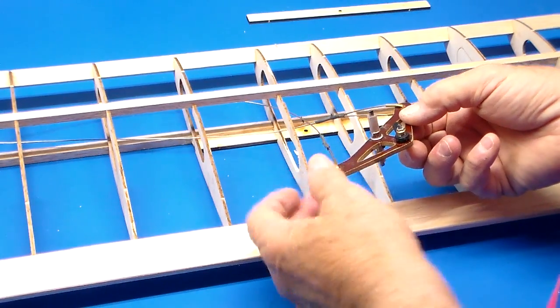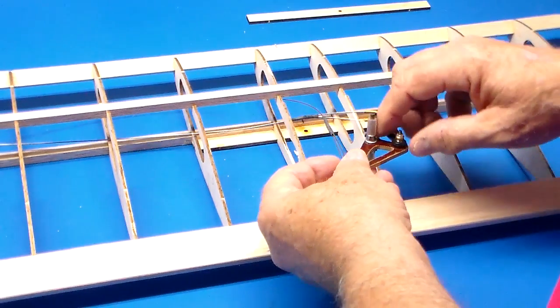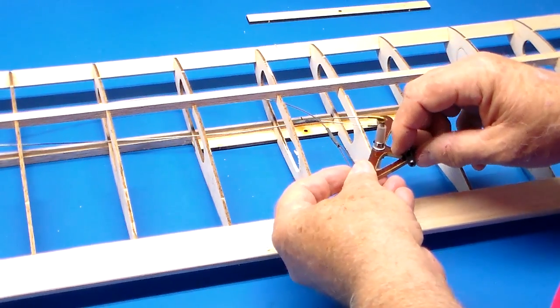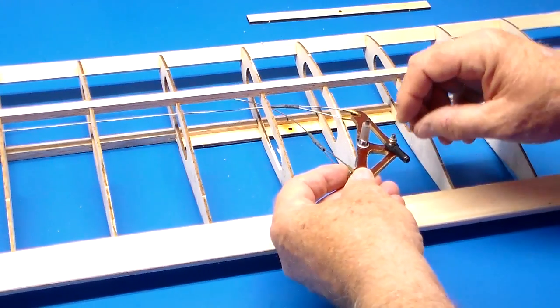We all know that a bell crank has a center post that goes through there, then you have a hole here that your push rod goes into, and then the swiveling action controls the elevators.